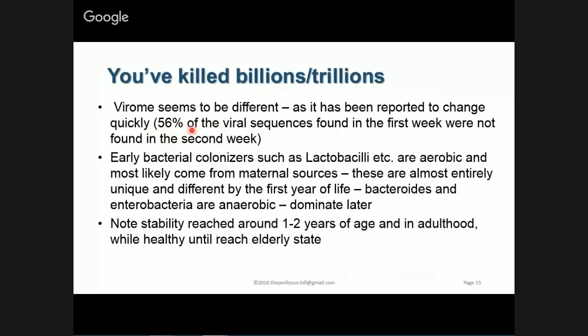The viral sequences from the time of birth over the course of the second week of development in children don't seem to change as quickly. The reported changes are only about 56%, and those early bacterial colonizers like lactobacilli tend to be aerobic — found higher in the GI tract where there is more air. Around one to two years of age, after you have started eating regular food, your bacterial fingerprint — your microbiome — tends to be relatively stable as long as nothing else is going on.